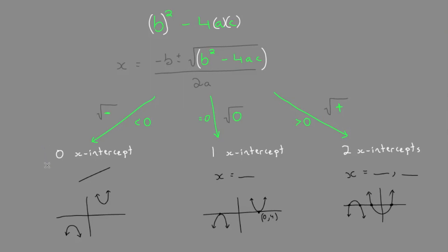So to recap, we have zero x-intercepts when the discriminant is less than zero, when b squared minus 4ac is negative.